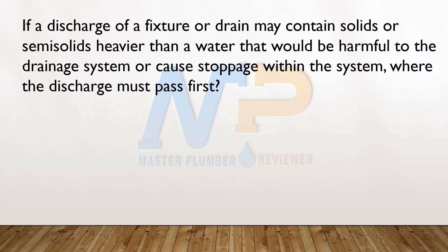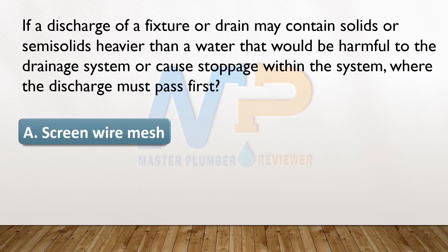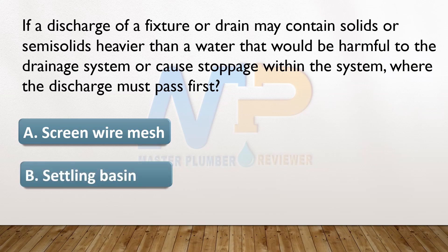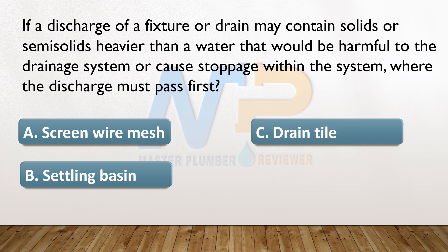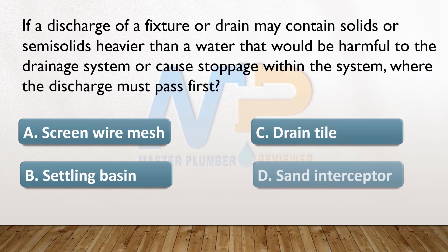If a discharge of a fixture or drain may contain solids or semi-solids heavier than water that would be harmful to the drainage system or cause stoppage within the system, where must the discharge pass first? A. Screen wire mesh. B. Settling basin. C. Drain tile. D. Sand interceptor.